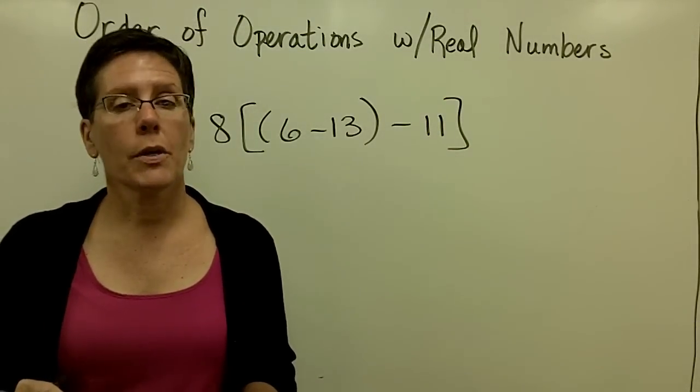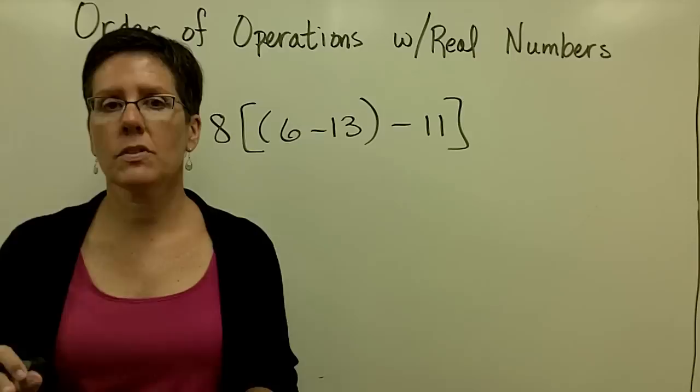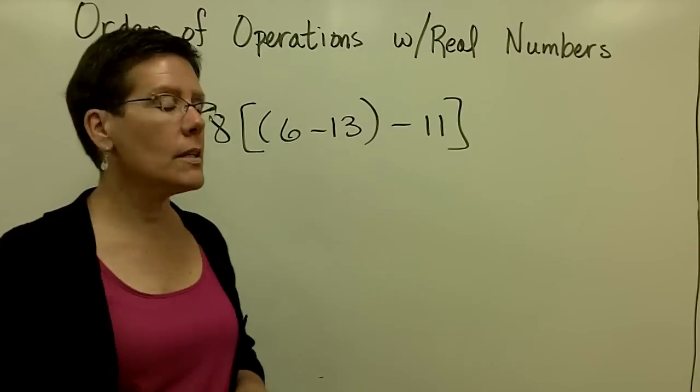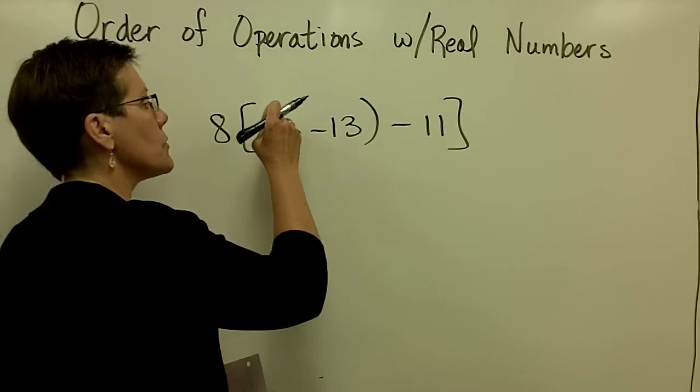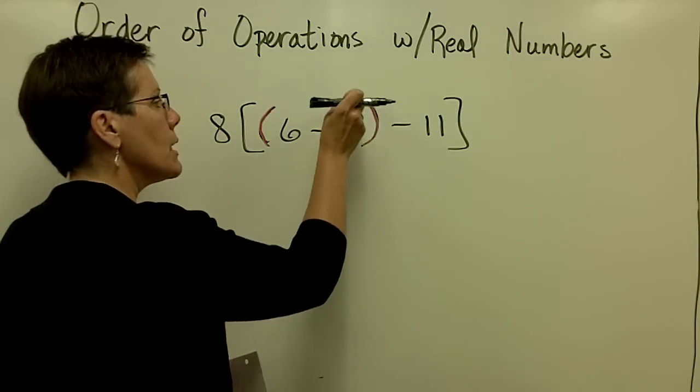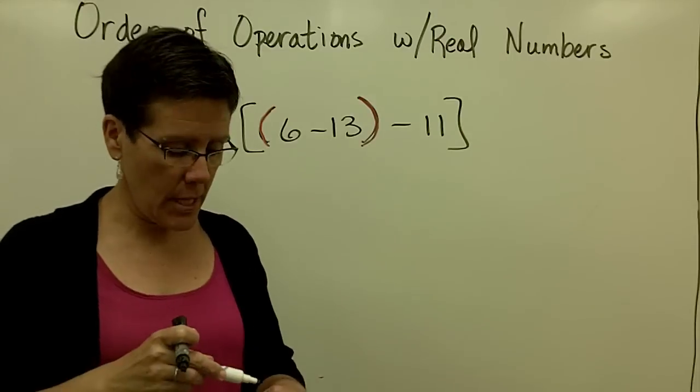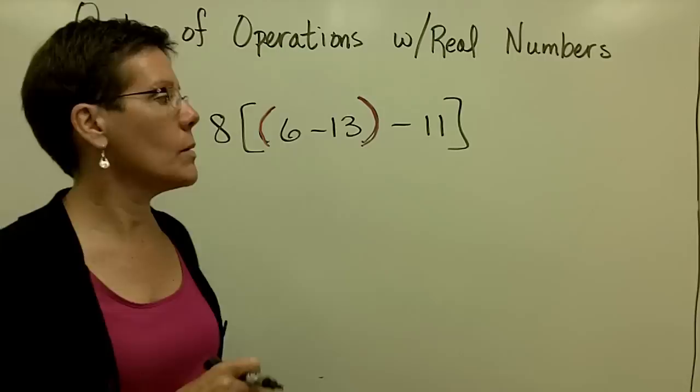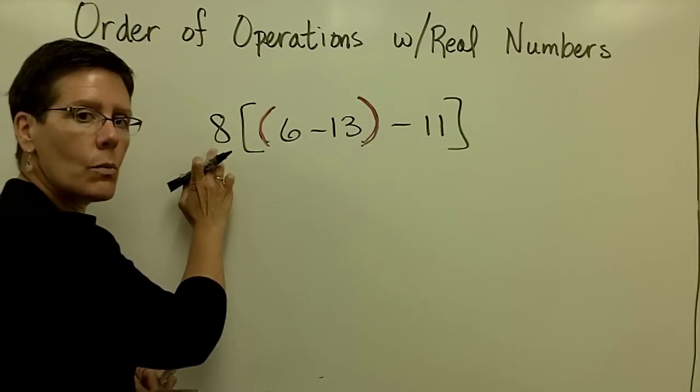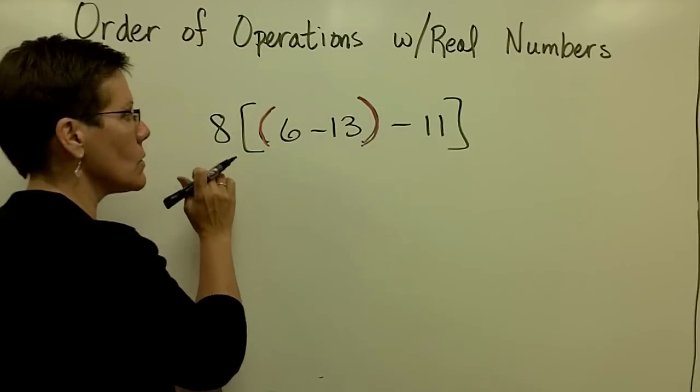Order of operations says to do what's in the parentheses first. When there's multiple sets of parentheses, you do what's in the innermost set of parentheses first. So this group gets managed first, then the square brackets. So I'm just going to work in there. I'm not doing anything with this until the very end, so leave it alone.